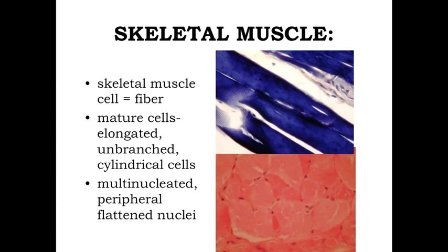The first example of muscle tissue we're going to look at is skeletal muscle. Taking a look from gross anatomy down to the microscopic level, a single skeletal muscle fiber corresponds to a single skeletal muscle cell. In mature skeletal muscle, you're going to see very elongated cells — very thin and very long — essentially forming unbranched cylinders that are incredibly long, running the length of the anatomical muscle.